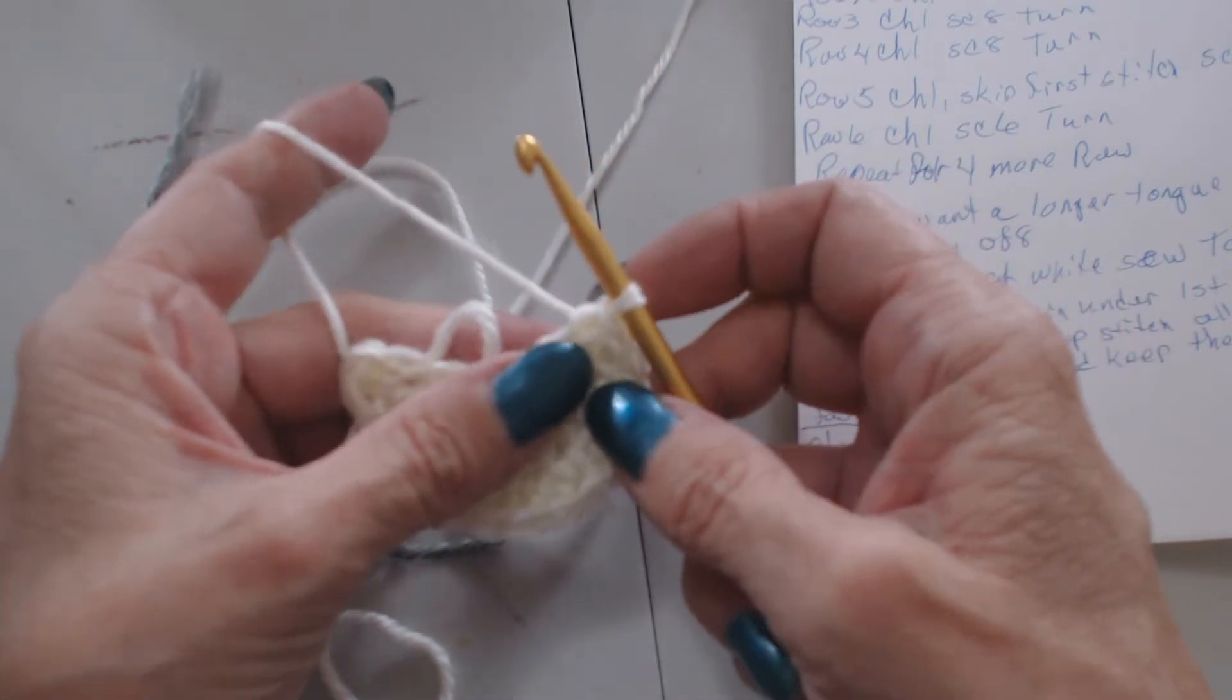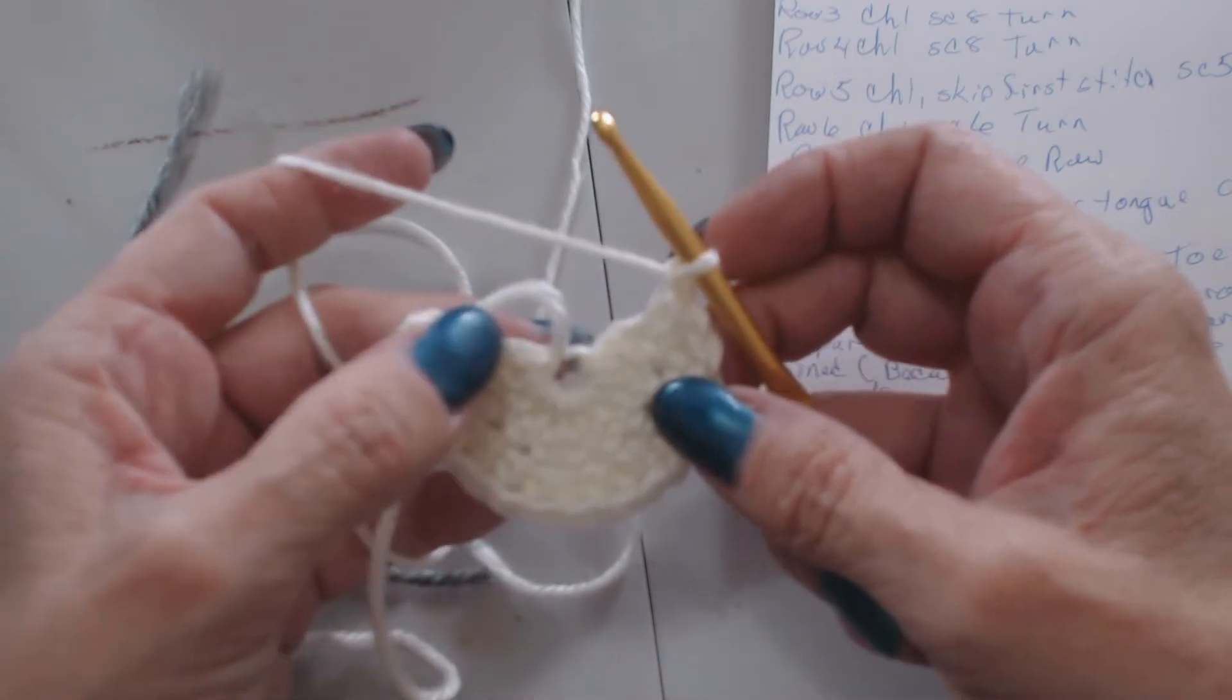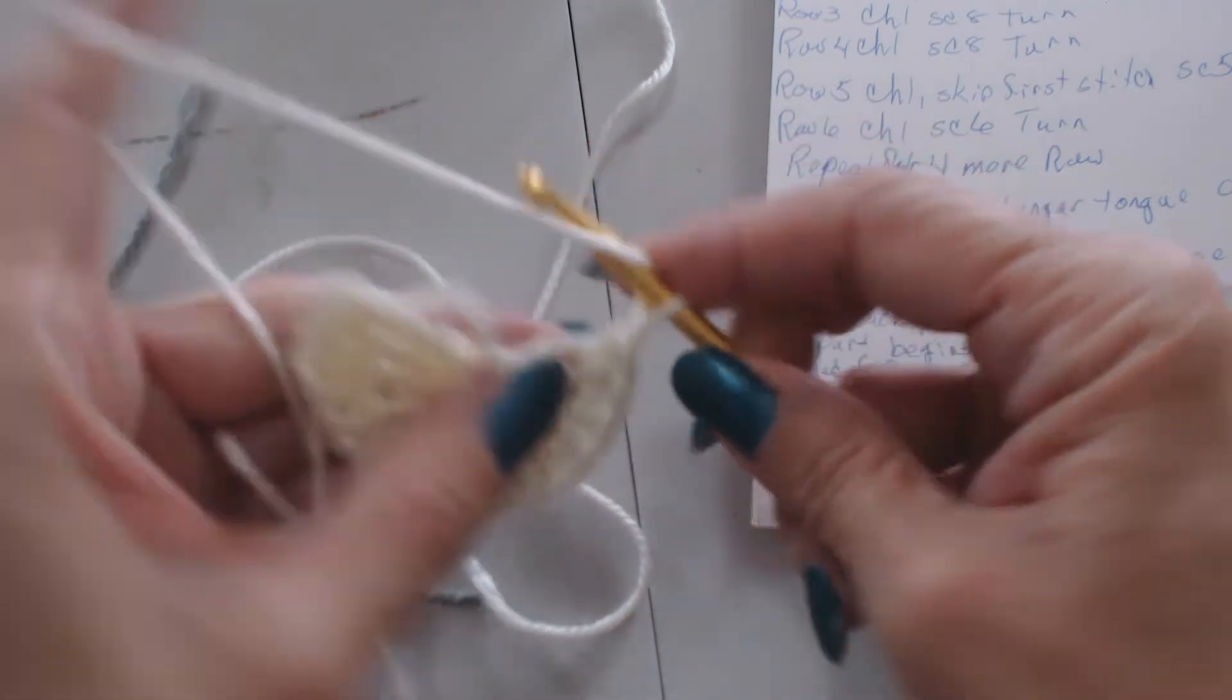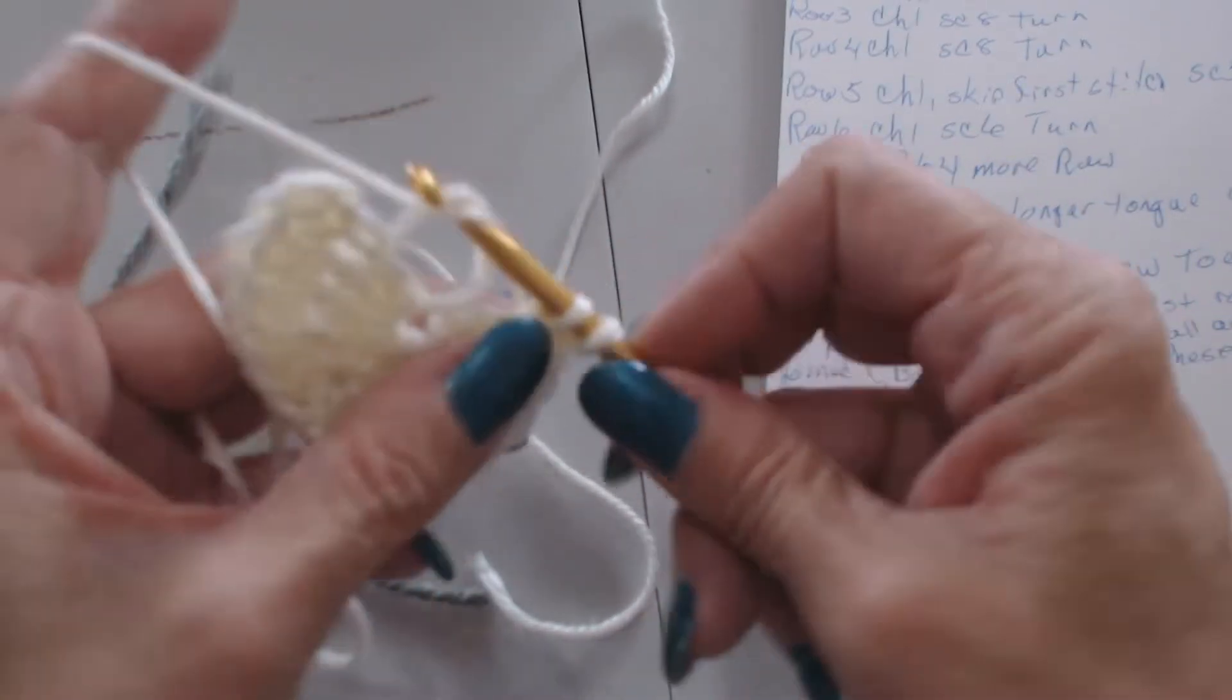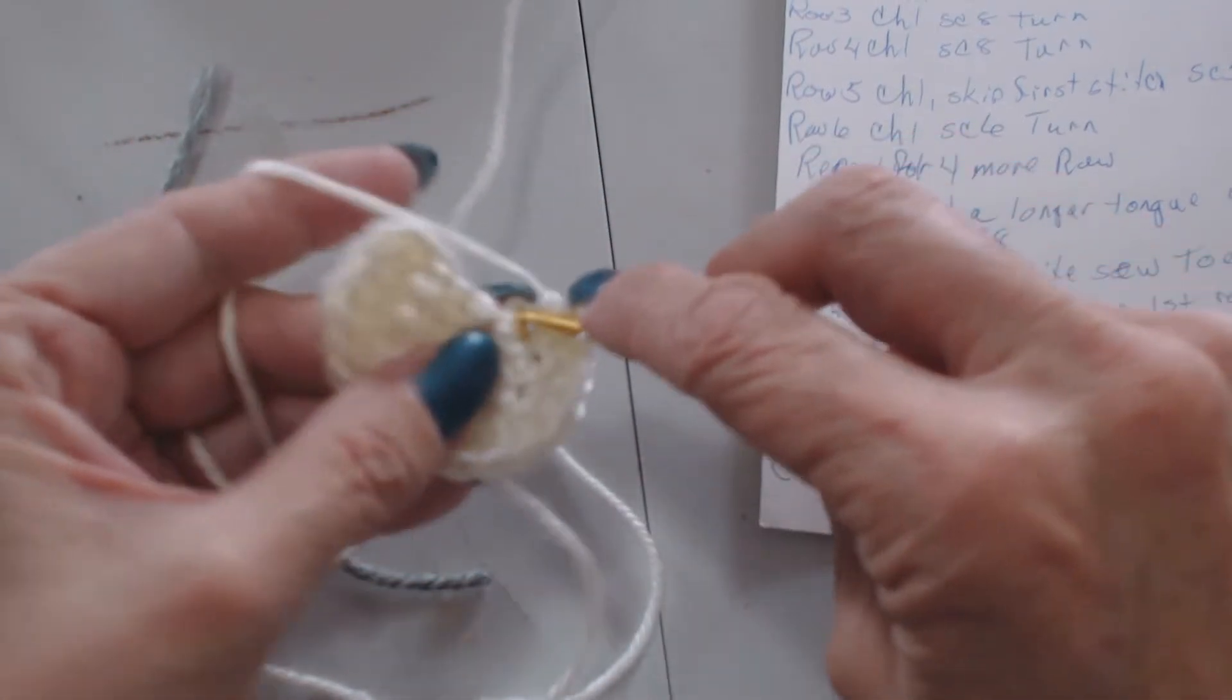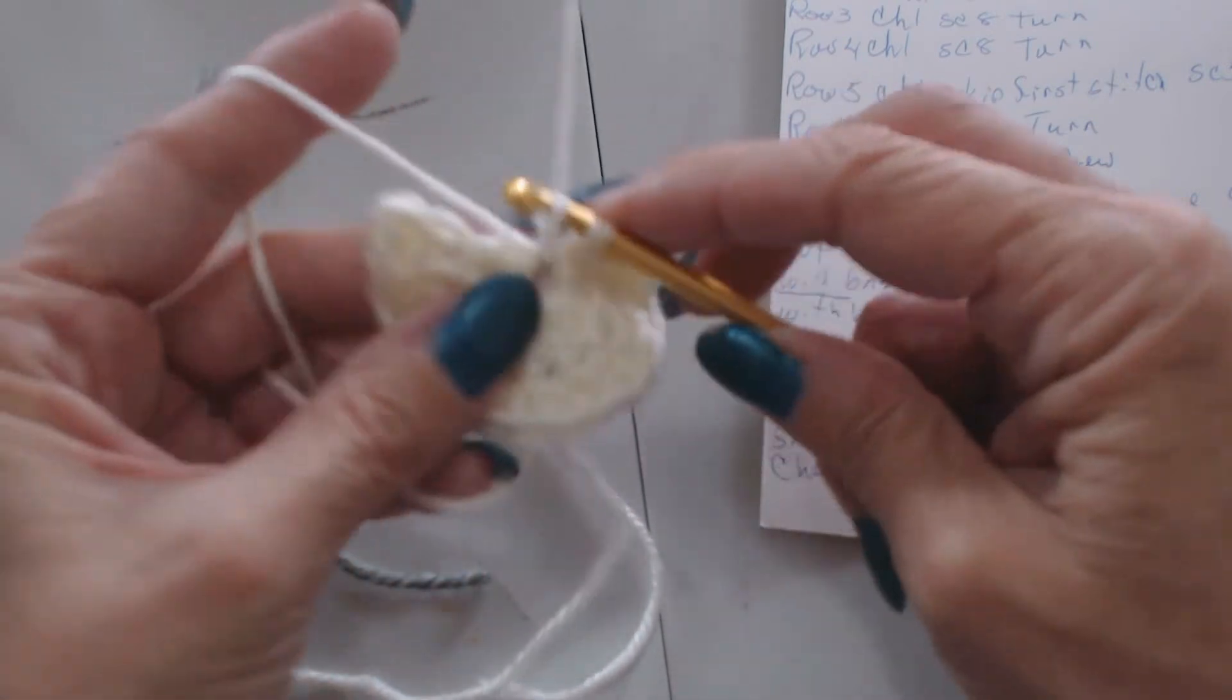Now from there you don't turn, you just chain one and you want eight single crochet along this flat edge here. And make sure you put two of them in the center, which will be three on each flat end. And we get two in the center here.